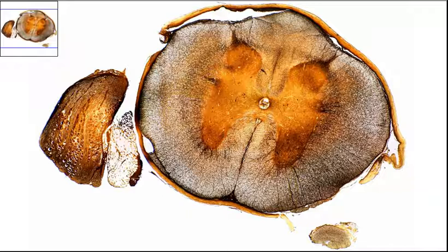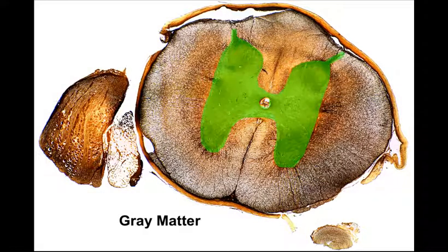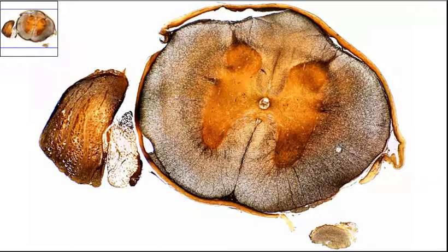When you look at the spinal cord, you can notice that it has two distinct types of tissues. You have this inner tissue, which kind of looks like a butterfly pattern almost — this is going to be your gray matter. This outside area around the gray matter is going to be known as your white columns or white matter.